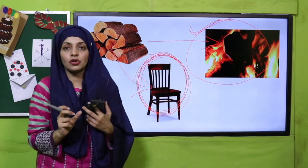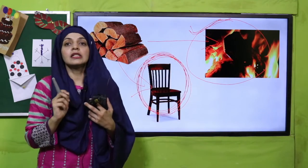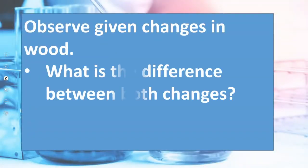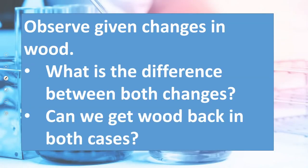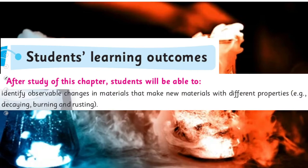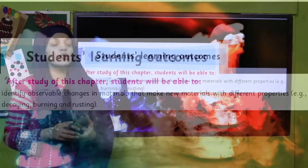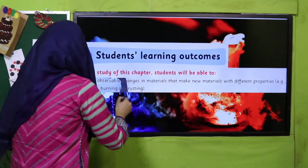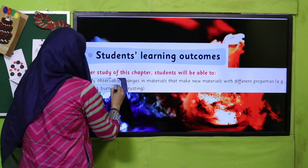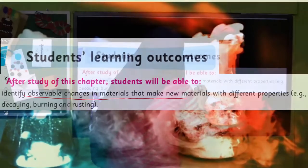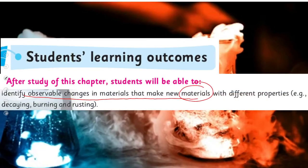I will also give you a practical demonstration of this so you will completely understand it. In today's lecture, the students will be able to identify observable changes in materials that make new materials with different properties — for example, decaying, burning, and rusting.